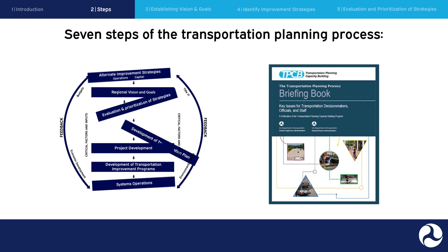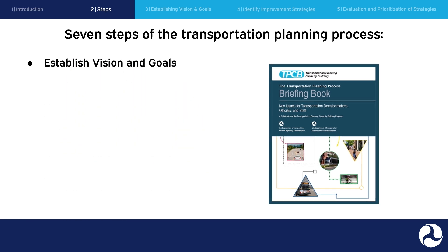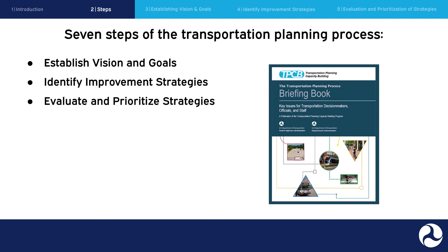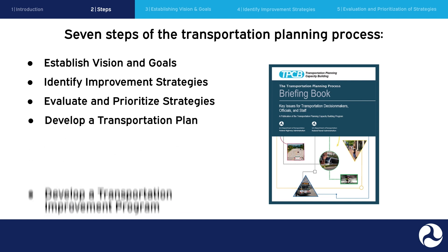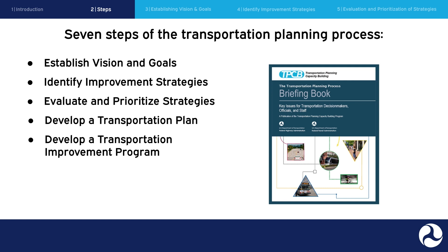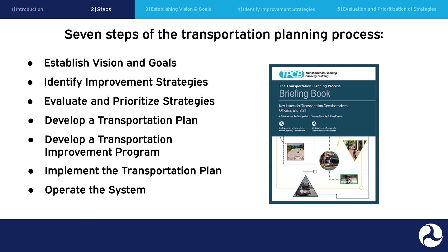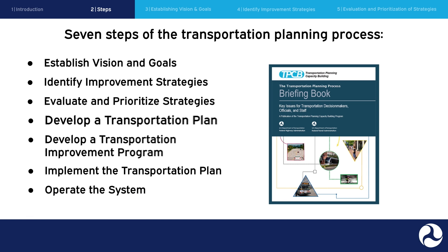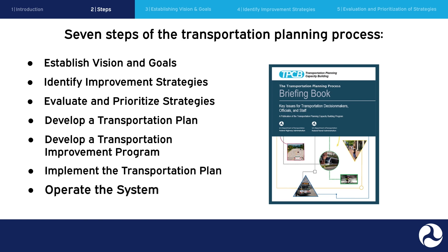The seven steps are: establish vision and goals; identify improvement strategies; evaluate and prioritize strategies; develop a transportation plan; develop a transportation improvement program; implement the transportation plan; and operate the system. Let's go through each of these steps one by one at the MPO level.